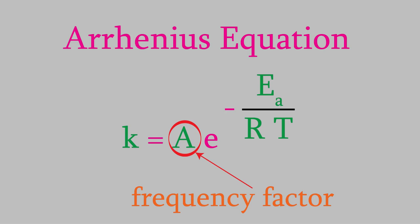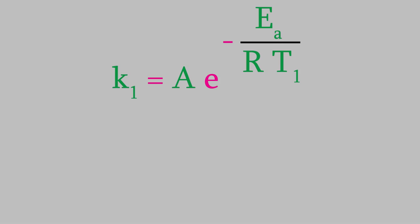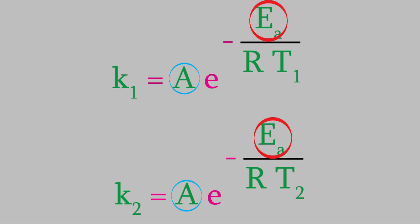Here's how. Suppose we perform a reaction twice, at two different temperatures. At temperature 1, we have this equation, and at temperature 2, we have this one. The activation energy is the same no matter what the temperature is, so Ea is the same both times, and so is A. But we do have two different rate constants.